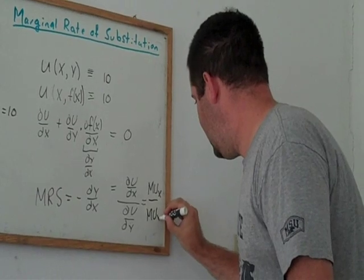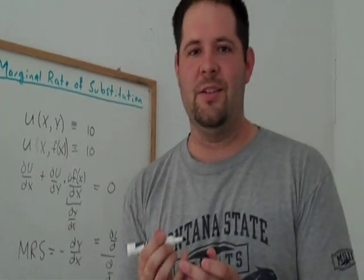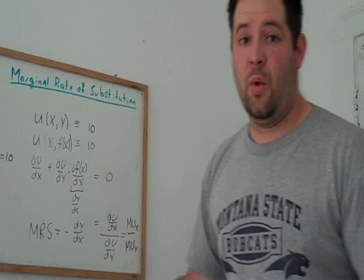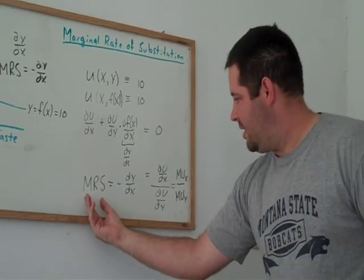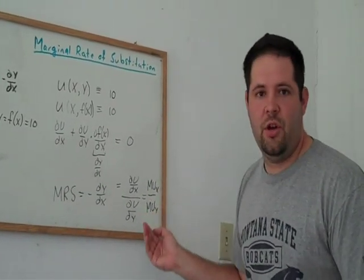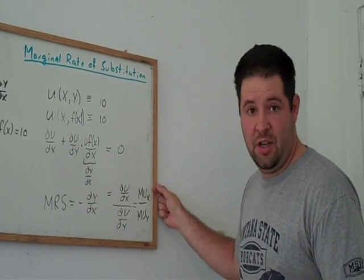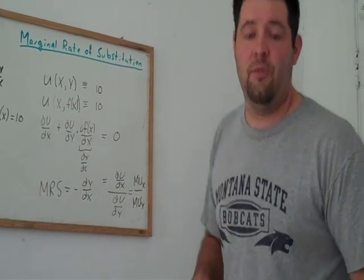And so there you have it, an alternative calculus-based justification for this very important equation. Marginal rate of substitution equals the ratio of marginal utilities, marginal utility of x over marginal utility of y.